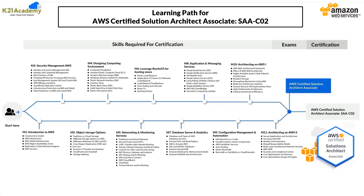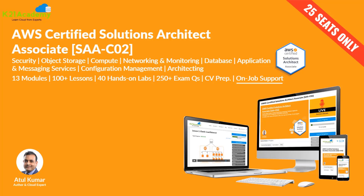This content is from our AWS Certified Solution Architect Associate certification training, which covers everything from introduction to AWS, security management, object storage, computing environments, networking and monitoring, Route 53, database and analytics, application and messaging services, configuration management, and architecting on AWS. The training takes you from basic to advanced level with tips and resources for clearing the certification exam, plus hands-on labs, exam preparation, and one year of on-job support.